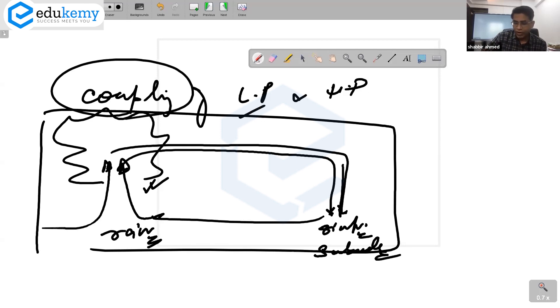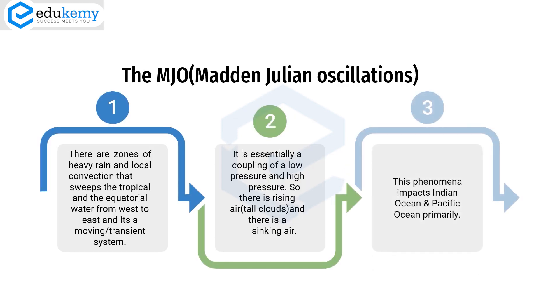It's a coupling of a low pressure and a high pressure. This whole system moves. It's a transient system moving from west towards the east. Whenever I have rising air in one side, it will have heavy rains. When I have sinking air, it has subdued rains. This phenomenon impacts Indian Ocean and Pacific Ocean primarily.